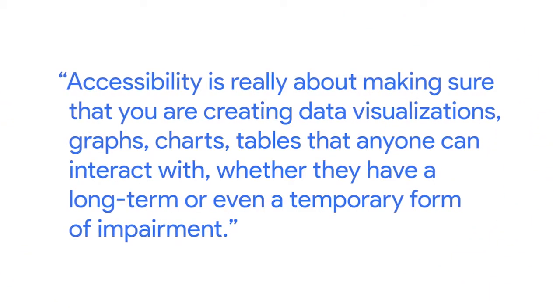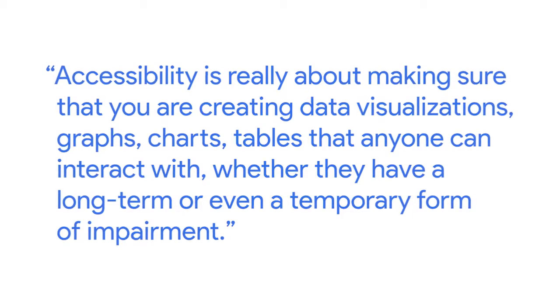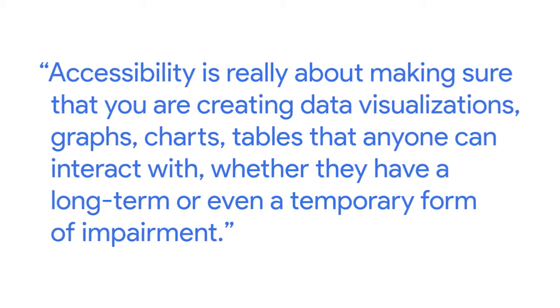I'm Andrew, and I'm a Data and Insights Manager on the Ads Research and Insights Team. I help Google make better decisions through data and also work with our data to tell stories for marketers — basically data storytelling at scale. Accessibility should be built into everything we do. Accessibility is really about making sure that you are creating data visualizations, graphs, charts, and tables that anyone can interact with, whether they have a long-term or even just a temporary form of impairment — it could be auditory, visual, or sensory in some way. Typically the ones we talk about in data visualization have to deal with color and contrast, or maybe they can't see. There are a number of things you can do in your visualizations to make it easier for people to understand your graph and to understand the points you're trying to make.